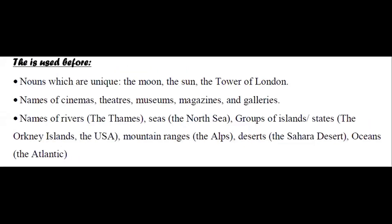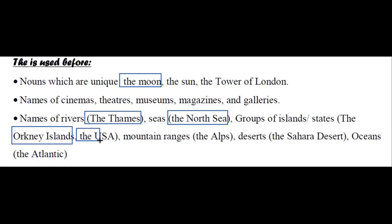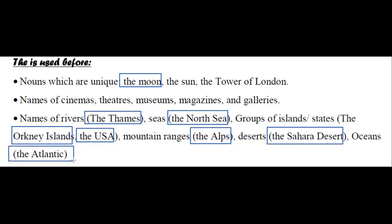'The' is used before nouns which are unique. You can say 'the moon', 'the sun', 'the Tower of London'. Also used with names of cinemas, theatres, museums, magazines, and galleries; names of rivers like the Thames; seas like the North Sea; groups of islands and states like the Orkney Islands or the USA; mountain ranges like the Alps; deserts like the Sahara Desert; oceans like the Atlantic.